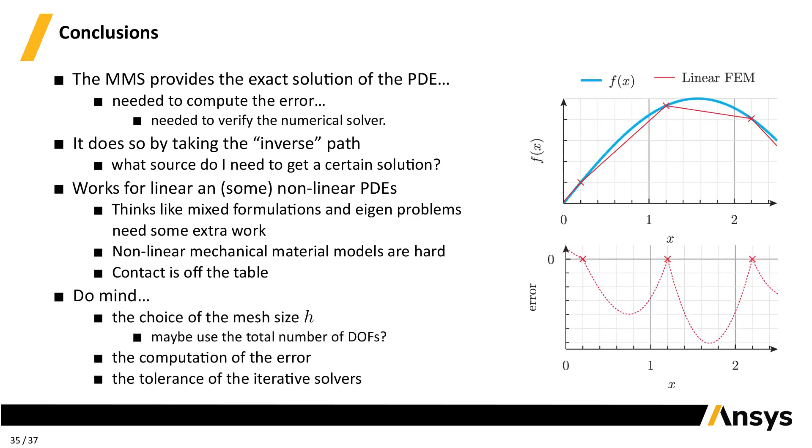Some other things to mind. The mesh size: what does that mean for an unstructured grid? The computation of the error: take into account that the larger differences are away from the nodes, and we have to integrate the square of that difference to get the L2 error. Make sure you nail it right. The tolerance of the iterative solvers. I know, direct solvers are nicer, but sometimes there are jobs that need to involve iterative solvers only. At some point, there would be a competition for sources of errors.